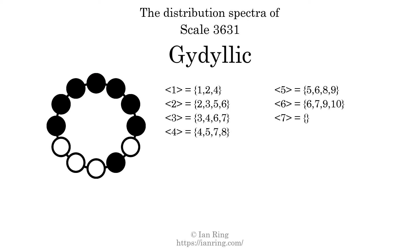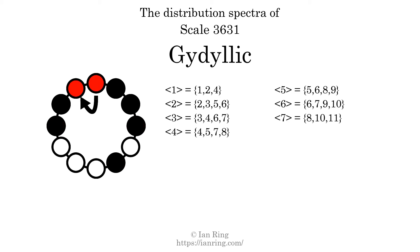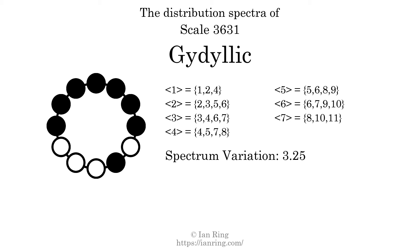Finally, the generic interval of 7 scale steps comes in 3 different specific interval sizes: 8, 10, and 11 semitones. The spectrum width of this generic interval is 3. The spectrum variation is the sum of all the widths divided by the number of tones. The spectrum variation of this scale is 3.25.